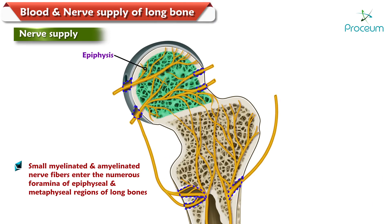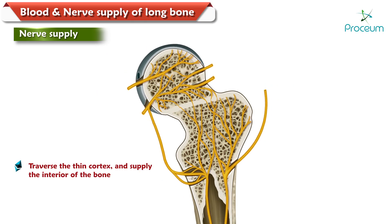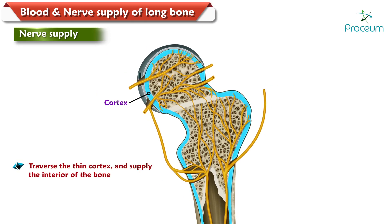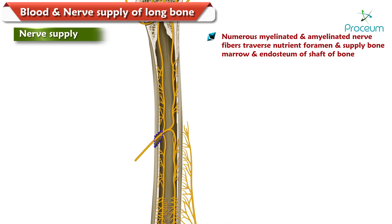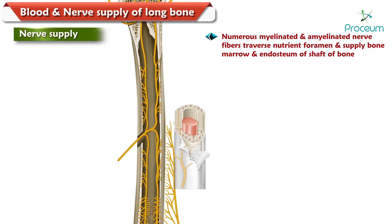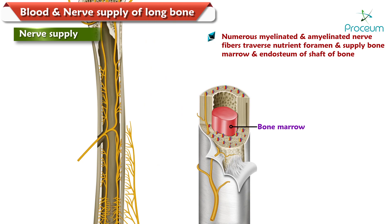Small myelinated and unmyelinated nerve fibers enter the numerous foramina of the epiphyseal and metaphyseal regions of the long bones, traverse the thin cortex, and then supply the interior of the bone. Numerous myelinated and unmyelinated nerve fibers traverse the nutrient foramen and supply the bone marrow and endosteum of the shaft of the bone.